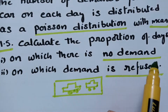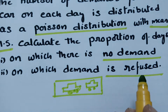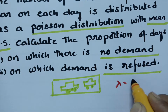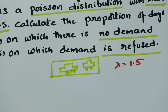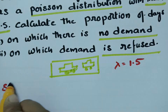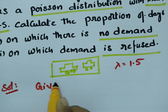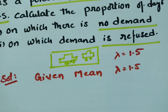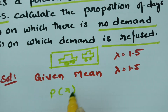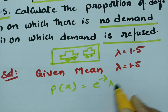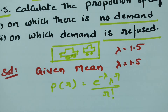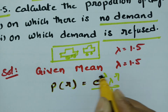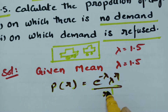First, we address the case on which there is no demand. If there is no demand, we consider r equal to 0. The mean value lambda is given as 1.5. According to the Poisson distribution, the formula is: P of r equals e to the power of minus lambda, times lambda to the power r, divided by r factorial.